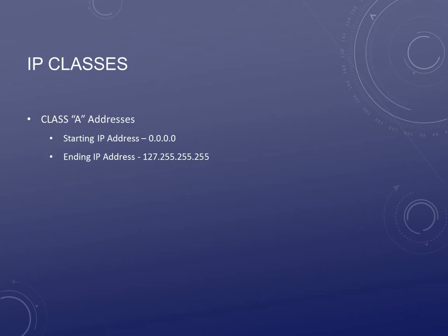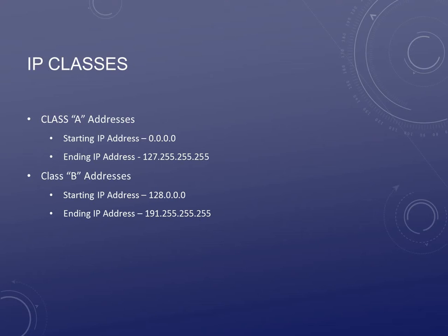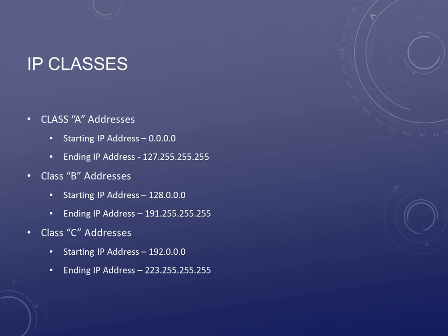So what are these classes? There's the Class A address — these are your biggest class. The starting range is technically 0.0.0.0 and it goes to 127.255.255.255. If you take a look at that first number, 0 to 127, when you see that, it's a Class A address. Class B addresses are between the 128 and the 191 range — so 128.0.0.0 to 191.255.255.255. And Class C is 192 to 223.